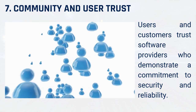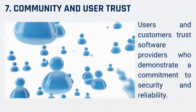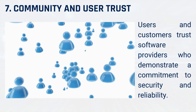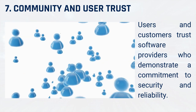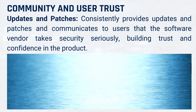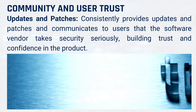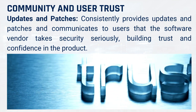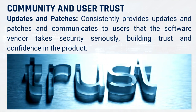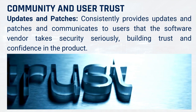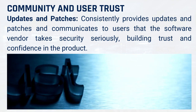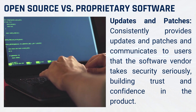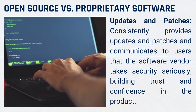7. Community and user trust. Users and customers trust software providers who demonstrate a commitment to security and reliability. Consistently providing updates and patches communicates to users that the software vendor takes security seriously, building trust and confidence in the product. Open source vs. proprietary software.